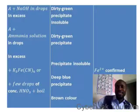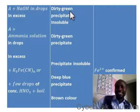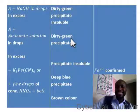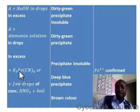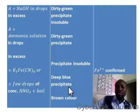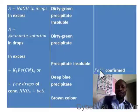A plus sodium hydroxide in drops, then in excess — dirty green precipitate that is insoluble even with excess NaOH. A plus ammonia solution in drops, then in excess — dirty green precipitate that is insoluble. Adding K₃[Fe(CN)₆] or a few drops of concentrated HCl and boiling gives a deep blue precipitate which turns brown upon boiling, confirming the presence of Fe²⁺.